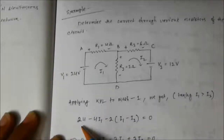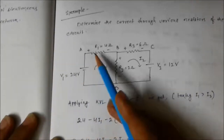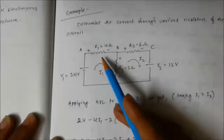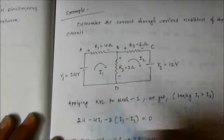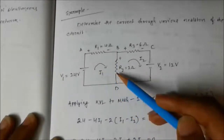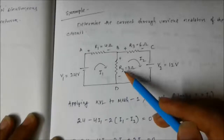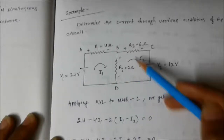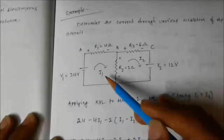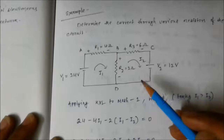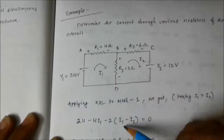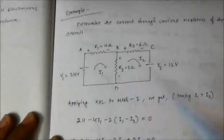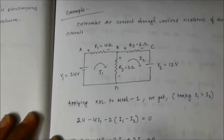We first apply Kirchhoff's Voltage Law in mesh one. The current flows from positive to negative through the 24V source, giving a negative voltage drop: 24 minus 4·i1 minus (i1 minus i2)·2 equals zero. The term (i1 minus i2) is used because i2 is flowing in the opposite direction to i1 in that shared branch. The summation of voltage drops in a closed path equals zero — that is KVL.